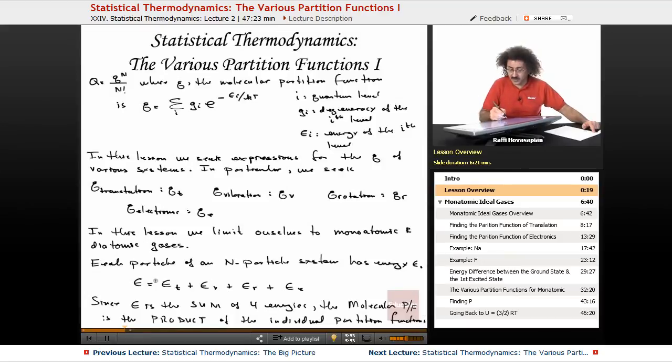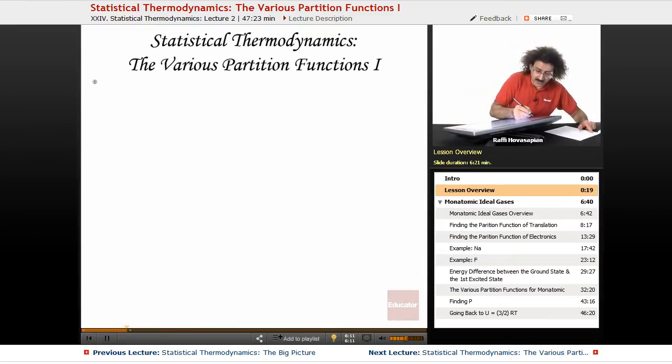The molecular partition function is the product of the individual partition functions for each component of the energy. The partition function for translation, vibration, rotation, and electronic. The energy is the sum of four energies, so the total molecular partition function is the product of the individual partition functions for each component.